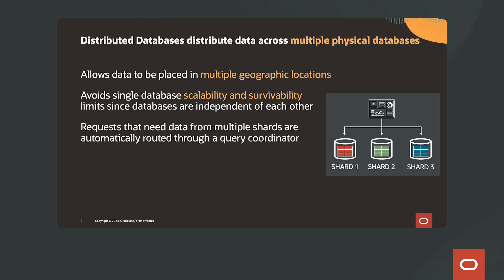Distributed databases distribute data across multiple physical databases, allowing data to be placed in multiple geographic locations. This avoids single-database scalability and survivability limits since databases are independent of each other. Requests that need data from multiple shards are automatically routed through a query coordinator.